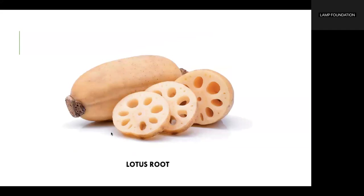Lotus root is known for its ability to clear heat and nourish the spleen and stomach. In TCM, raw and cooked lotus roots have different properties. Raw lotus root can effectively cool the blood, disperse blood stasis, and clear internal heat, making it suitable for those experiencing dry mouth and excessive internal heat. Cooking lotus root strengthens the spleen and stomach, nourishes chi and blood, and stops diarrhea, making it a great option for those with weak digestion.